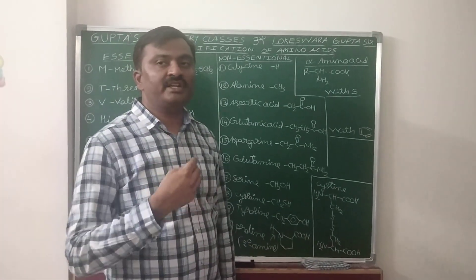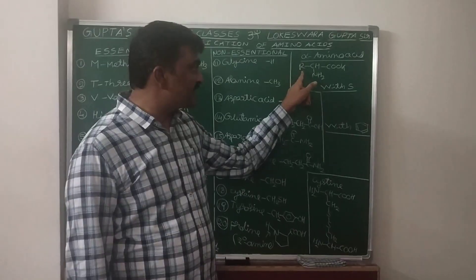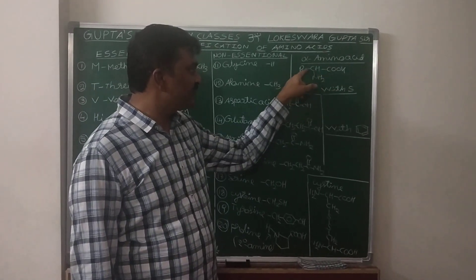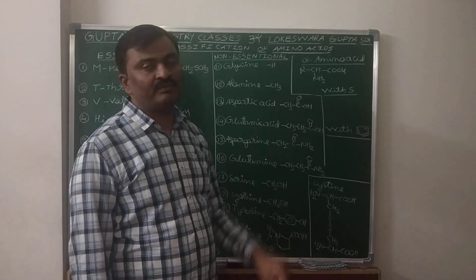In our body, 20 alpha amino acids are present. Alpha amino acids general formula is RCHNH2COOH. For these 20 alpha amino acids, this R will change.